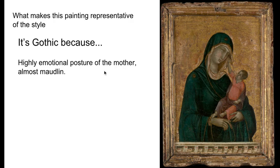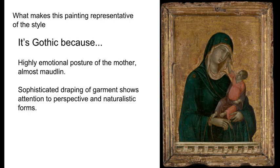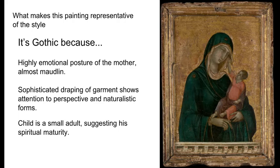What makes this Gothic? The Gothic style is evident in the highly emotional posture of the mother, almost maudlin in quality. The sophisticated draping of her garment underscores the artist's attention to some elements of perspective. And the child appears as a small adult, suggesting his spiritual maturity, even as he is young in age.